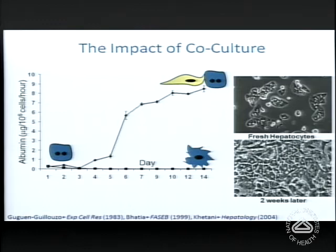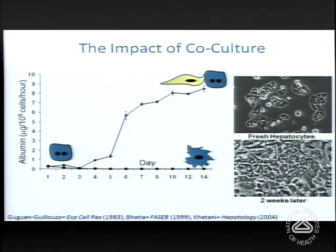In the early 80s, this observation was made by a French group — the Guguen-Guedeau group — and we call this the co-culture effect. When you add non-parenchymal cells from the liver to these cultures, you can see at least a transient rescue of this phenotype. This was originally made with cholangiocyte-like cells. Through the 80s and 90s, it was shown that many other non-parenchymal cells, and even mesodermally-derived cells from other species, could perform this function — suggesting this may be a developmental endodermal-mesodermal interaction.